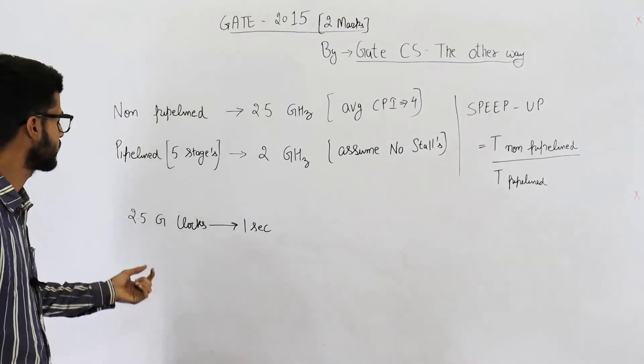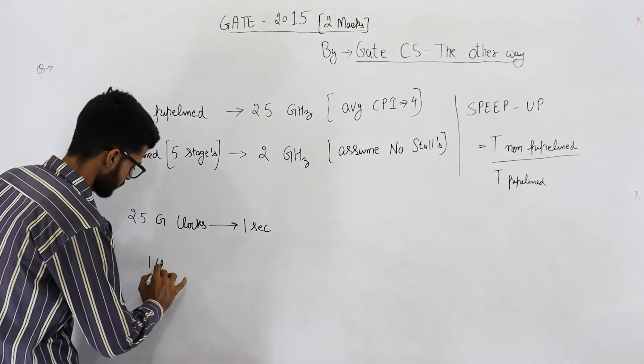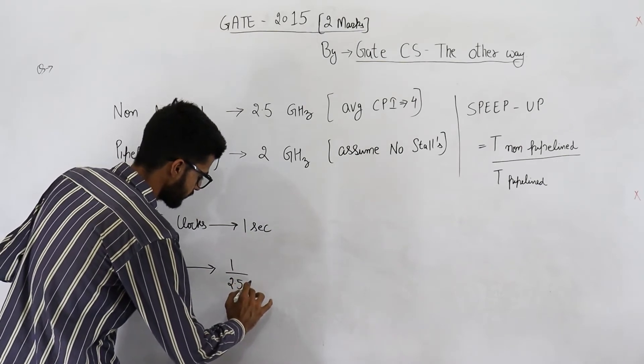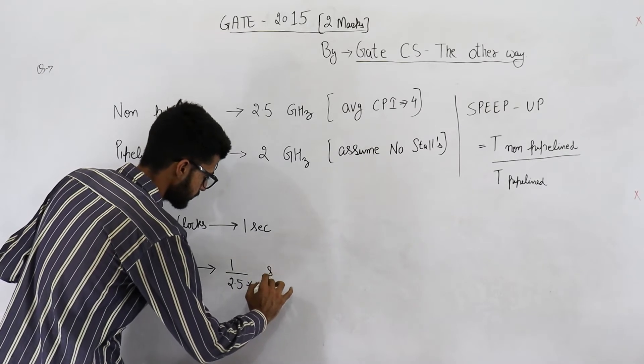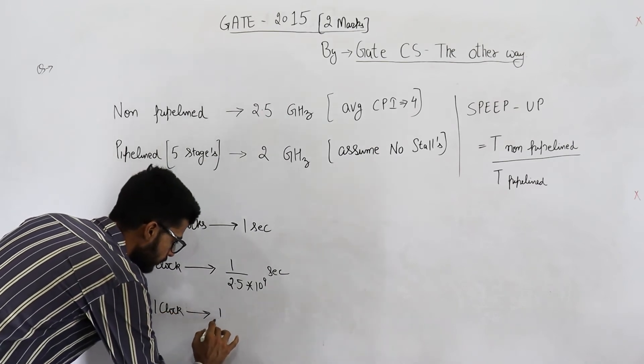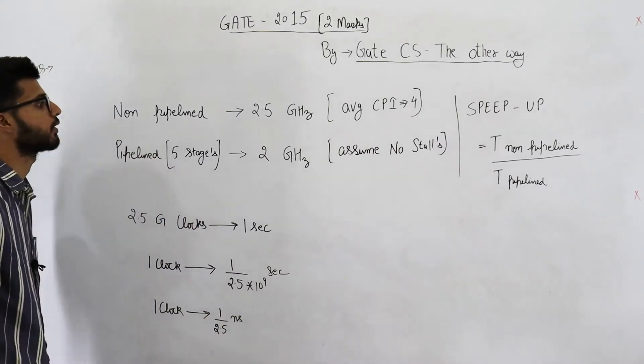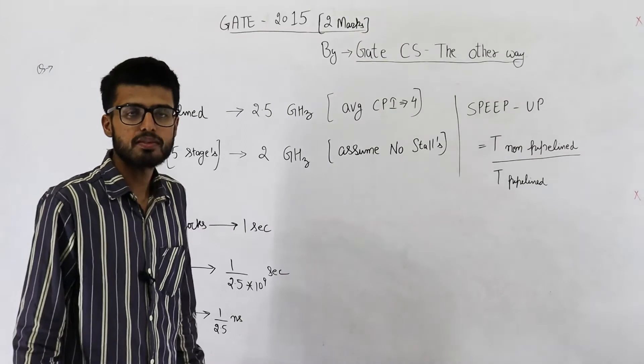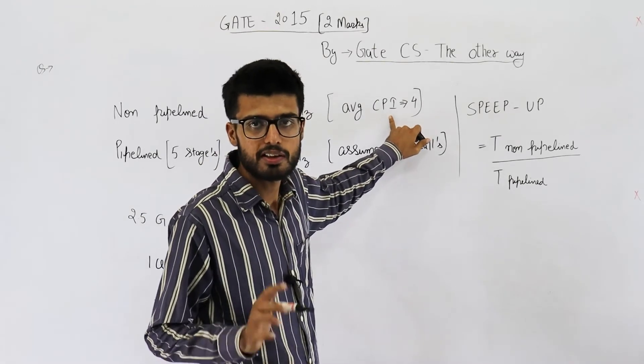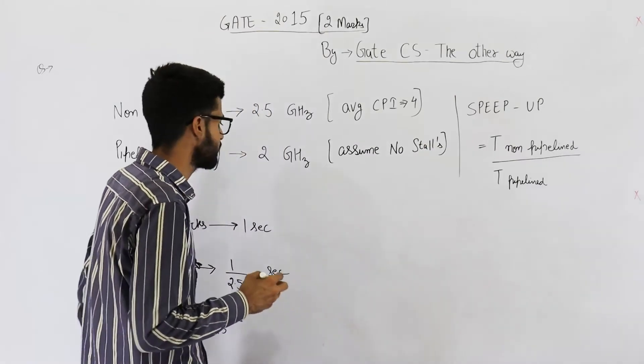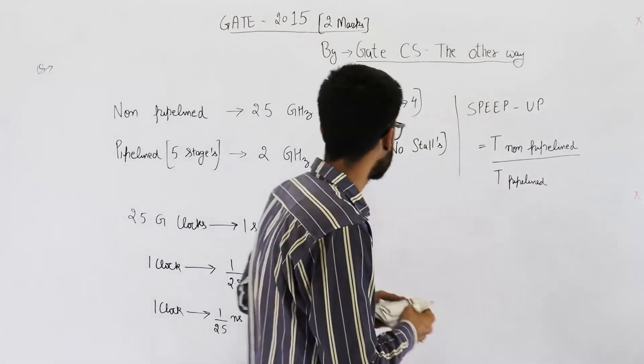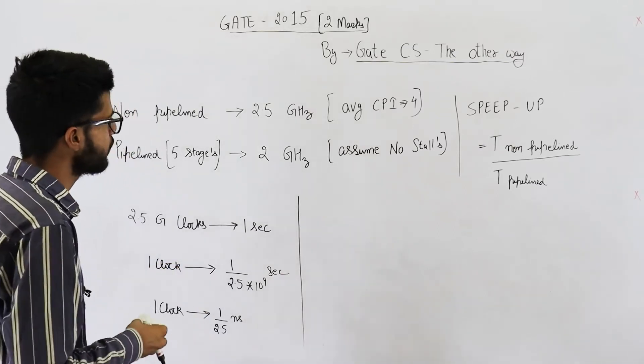Now, you can take this 2.5 GHz to that side. GHz is 10 raised to the power 9. That means 1 clock is generated after 1 upon 2.5 into 10 raised to the power 9 seconds. Which means 1 clock takes 1 upon 2.5 nanoseconds. So, in this case, 1 clock requires 1 by 2.5 nanoseconds. And, on average, every instruction requires 4 clocks. How much time will every instruction take on this processor on the non-pipelined version? That will be 4 multiplied by 1 upon 2.5 nanoseconds.